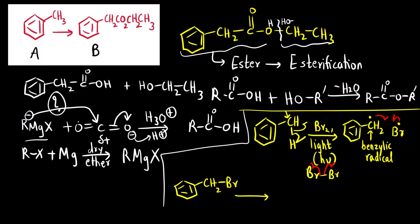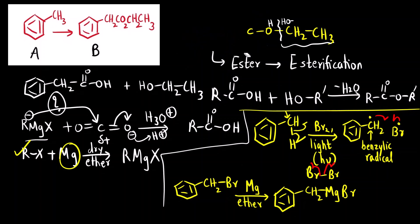Next, now we have got the alkyl halide. Where is alkyl halide? Here. Now we can react it with Mg in presence of dry ether to form the Grignard reagent, CH2MgBr. We have got the Grignard reagent right here.